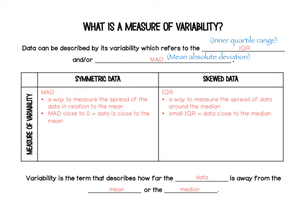So data can be described by its variability, which refers to the IQR, which stands for interquartile range, and MAD, which stands for mean absolute deviation.